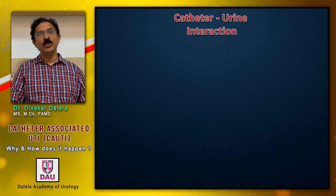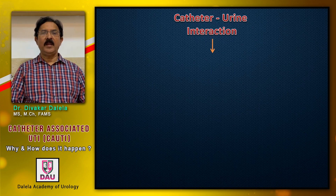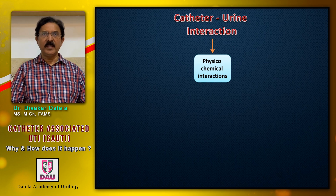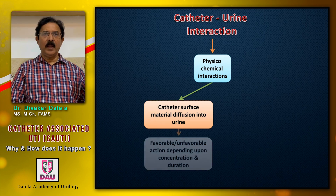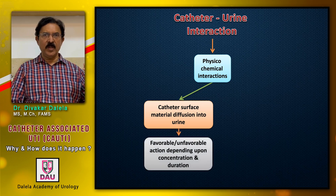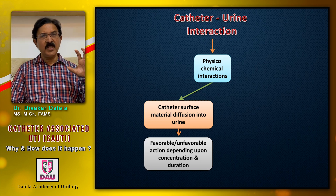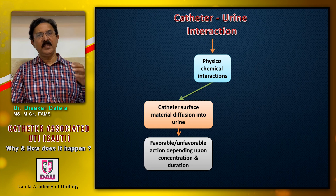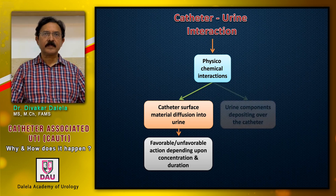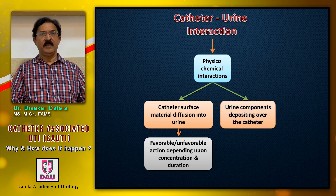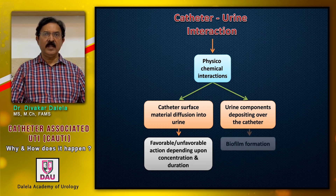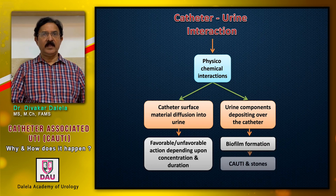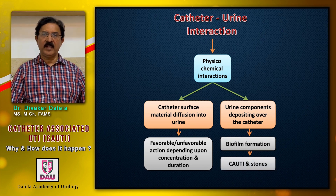The second interaction is catheter-urine biochemical interaction, involving physicochemical reactions. The catheter surface material gradually diffuses into the urine, and the chemicals which diffuse can have favorable and unfavorable action depending upon the duration of catheter indwelling and the urinary concentration. If the urine is dilute it is fine, but if it is concentrated, the concentration of chemical will accordingly increase. On the other hand, urinary components notice the catheter as a foreign body and start depositing on the catheter surface — a process called biofilm formation. This is a very important factor in the creation of CAUTI as well as bladder stones.